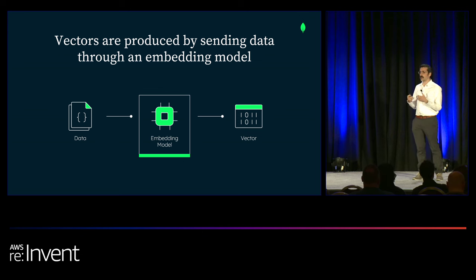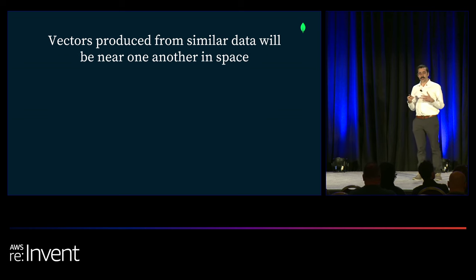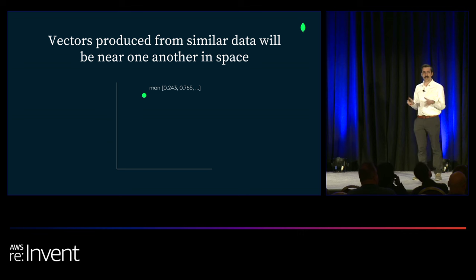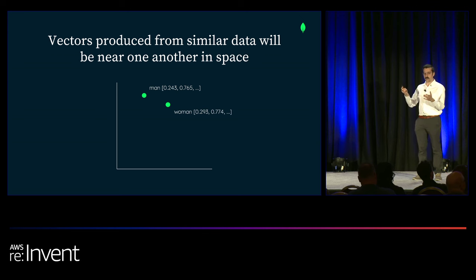What's really exciting recently is that there are all these off-the-shelf and general-purpose embedding models that can be used to embed data and create vectors based on your private data. What's unique about these vectors is that vectors produced on similar data will be near one another in this high-dimensional space. If you project it down into two dimensions — which isn't really what we're talking about with vectors — you might have a representation of the word 'man,' which would not be too far away from the representation of 'woman,' because they are semantically similar.